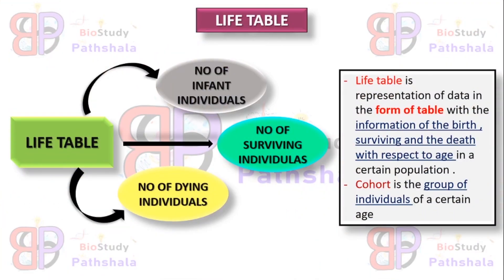So what is a life table? If we split these two words: life means some attributes of some living organisms, and table means a tabular form. So a life table is a tabular form of some attributes of data with information of a population for a certain time — the individuals who are infants, individuals who are surviving at a time, and individuals who are dying. This certain age group is known as a cohort.